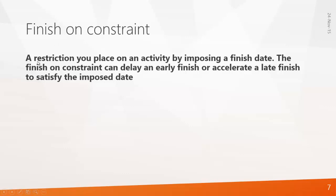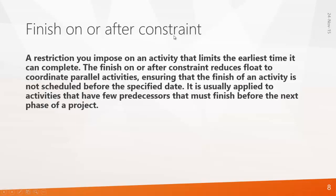The Finish On constraint is a restriction you place on an activity by imposing a finish date. It can delay an early finish or accelerate a late finish to satisfy the imposed date. The Finish On or After constraint is a restriction that limits the earliest time an activity can complete. It reduces float to coordinate parallel activities, ensuring the finish is not scheduled before the specified date. It is usually applied to activities with few predecessors that must finish before the next phase.